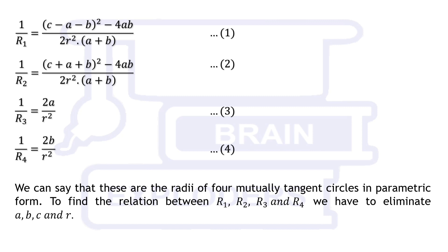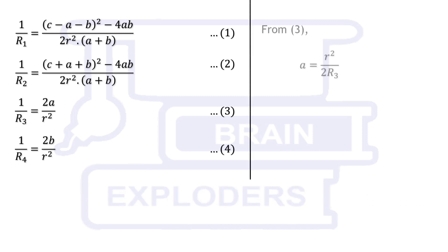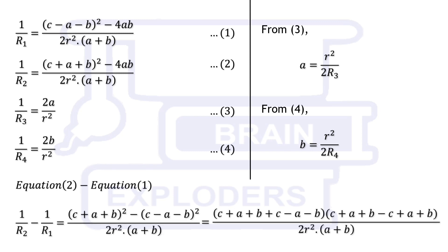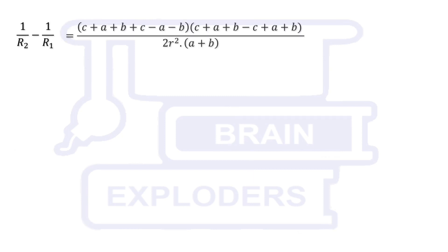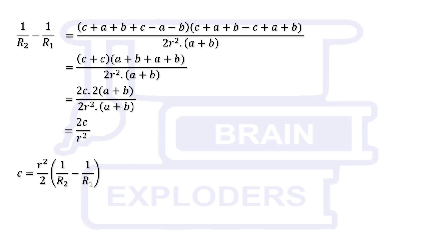From equation 3 and 4, a and b can easily be calculated in terms of other radii and can be eliminated in any equation whenever required. On subtracting equation 1 from 2 and simplifying, we get c equals to r squared over 2 times 1 upon r2 minus 1 upon r1. Now put these values of a, b and c in the first equation.